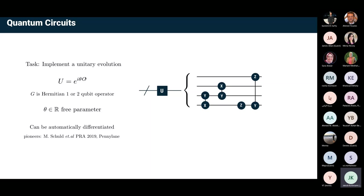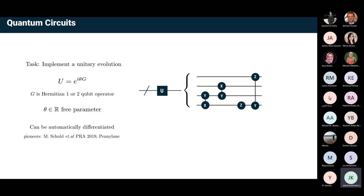All of these unitaries can additionally be parameterized — the angle here can be any real number. Each of these small building blocks can be differentiated, so you can compute the gradients of those parameters, and it can be automated in a very convenient way, pioneered by Maria Schuld and later the people from Xanadu in the PennyLane package. This opens a whole world of how we can assemble small parameterized circuits and by gradient descent optimize them to minimize the task we are interested in.